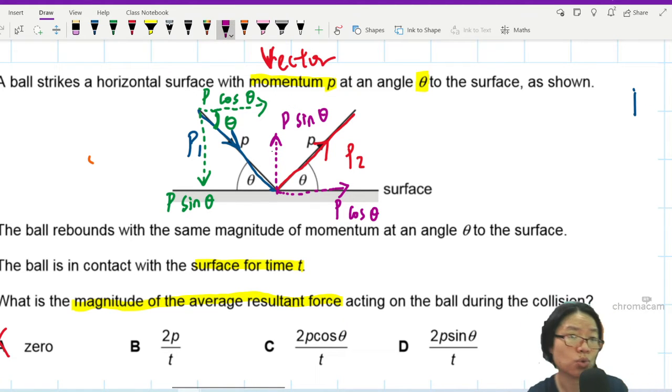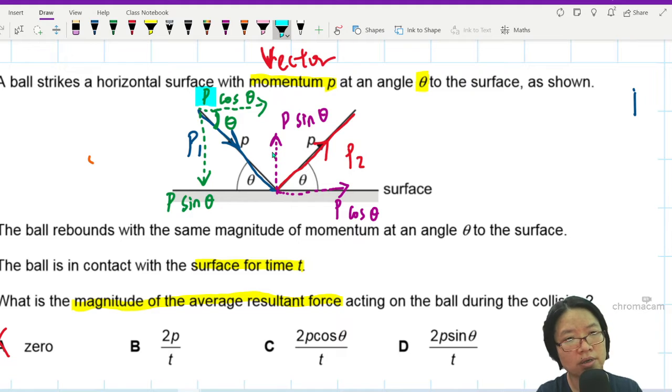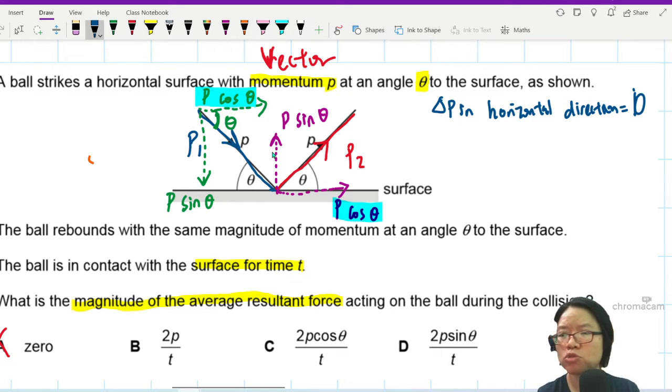So one interesting thing to note is that the horizontal momentum did not change. Check this out. Initial is p cos theta. Final is p cos theta. So the change in momentum in the horizontal direction is zero. No change in momentum.